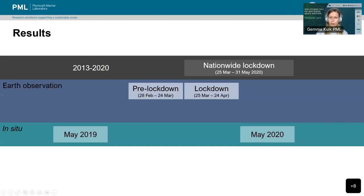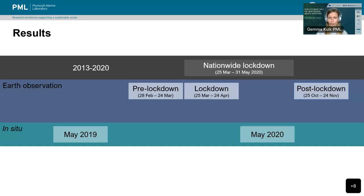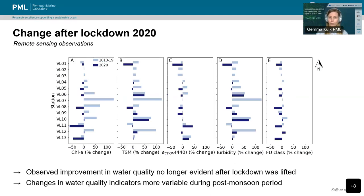We then studied changes in water quality from the in-situ observations. The in-situ observations from May 2020 provided an opportunity to study water quality later during lockdown, where remote sensing was obstructed by cloud cover. We observed lower total suspended matter and turbidity in the southern stations in May 2020, but higher values in the northern stations. Chlorophyll-a was lower or similar in May 2020 compared to May 2019, while CDOM absorption was higher at most stations. The observed improvement in water quality during lockdown was no longer evident after lockdown measures were lifted — changes in water quality indicators were more variable in the post-monsoon period, likely related to rainfall during the monsoon and associated changes in the hydrology of Lake Vembanad.